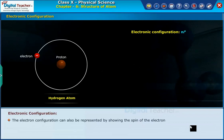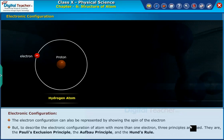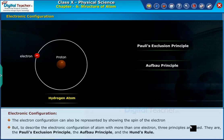The electron configuration can also be represented by showing the spin of the electron. But to describe the electronic configuration of atom with more than one electron, three principles are used: the Pauli's exclusion principle, the Aufbau principle, and Hund's rule.